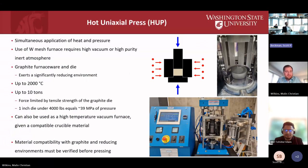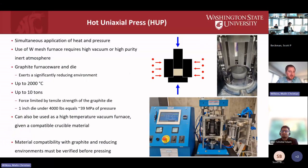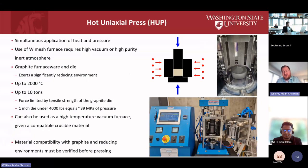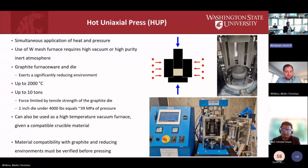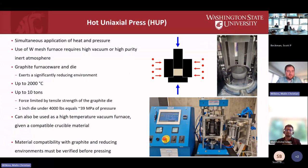The press can also be used as a high-temperature vacuum furnace, as long as you have a compatible crucible material. Before anyone asks about using it: the most important lesson we've learned is that material compatibility with graphite in reducing environments must be verified before pressing. There have been lessons learned about interactions with the dies, and about materials that emit oxygen disrupting the vacuum and potentially damaging the tungsten mesh furnace.